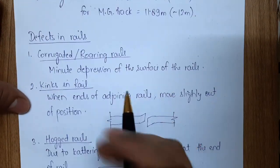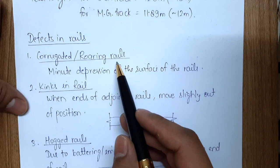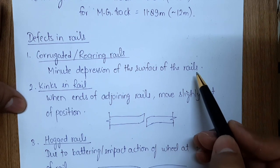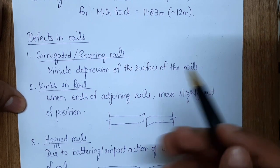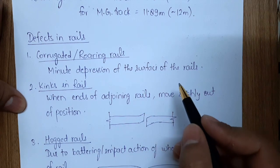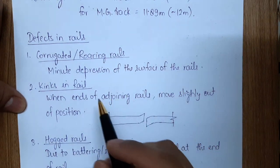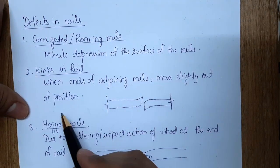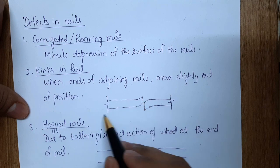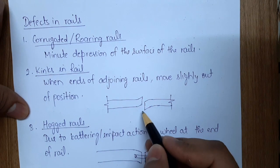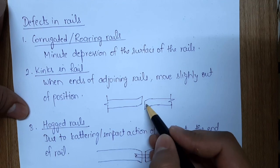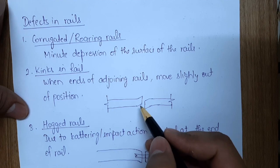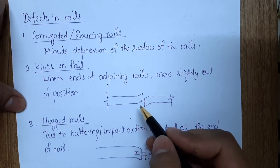Now we will see some defects in rails. First, corrugated or roaring rails — these are minute depressions formed on the surface of the rail. Second, kink in the rail — this occurs when the end of an adjoining rail moves slightly out of position. At the joint, if one end moves up and the other rail's end moves down, that situation is called a kink in the rail.